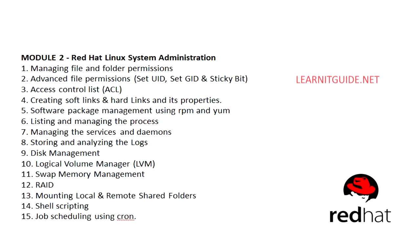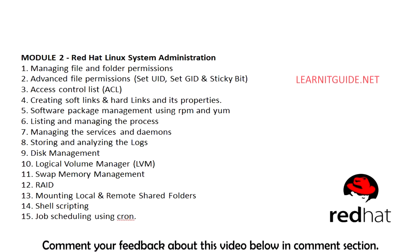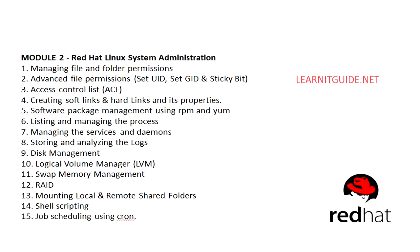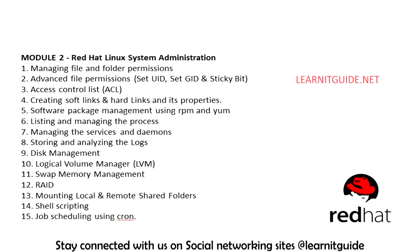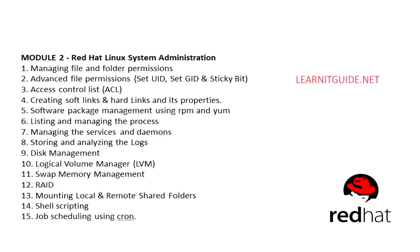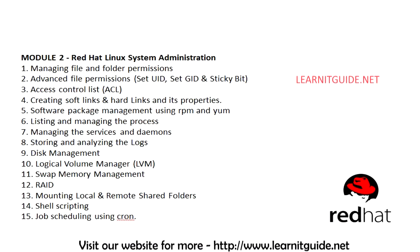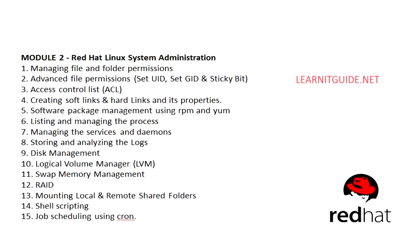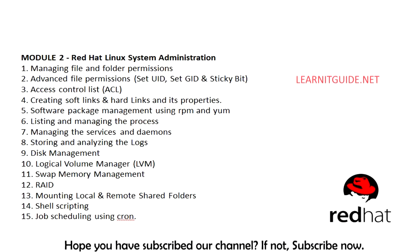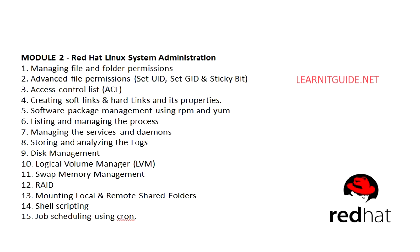SA2 course contents include: managing file and folder permissions, advanced file permissions and access control lists (ACL), creating soft links and hard links, software package management using RPM and yum, listing and managing processes, managing services and daemons, storing and analyzing logs, disk management, logical volume management (LVM), swap memory management, RAID, mounting local and remote shared folders, shell scripting, and job scheduling using cron.